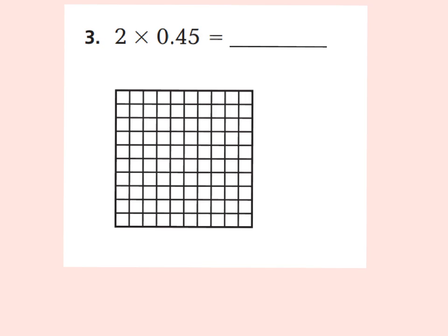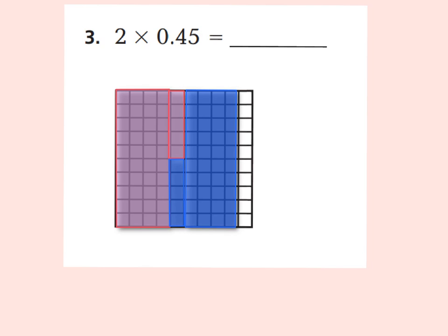For number 3, shade in 2 groups of 45 hundredths. Go ahead and pause the video — remember, use 2 different colors if you can. So if you shaded in 2 groups of 45 hundredths, your model should look similar to mine, maybe different colors. I'm going to have 1 group of 45 hundredths shaded in — that's 4 groups of tenths and 1 group of 5 hundredths — and I'm going to do that twice. So I have 4 groups of tenths and 5 one-hundredths. When you multiply those together, you'd have 2 groups of 45 hundredths. Using the model, you can see that you have 9 tenths shaded in, also known as 90 hundredths. Remember, 90 hundredths is the same value as 9 tenths.